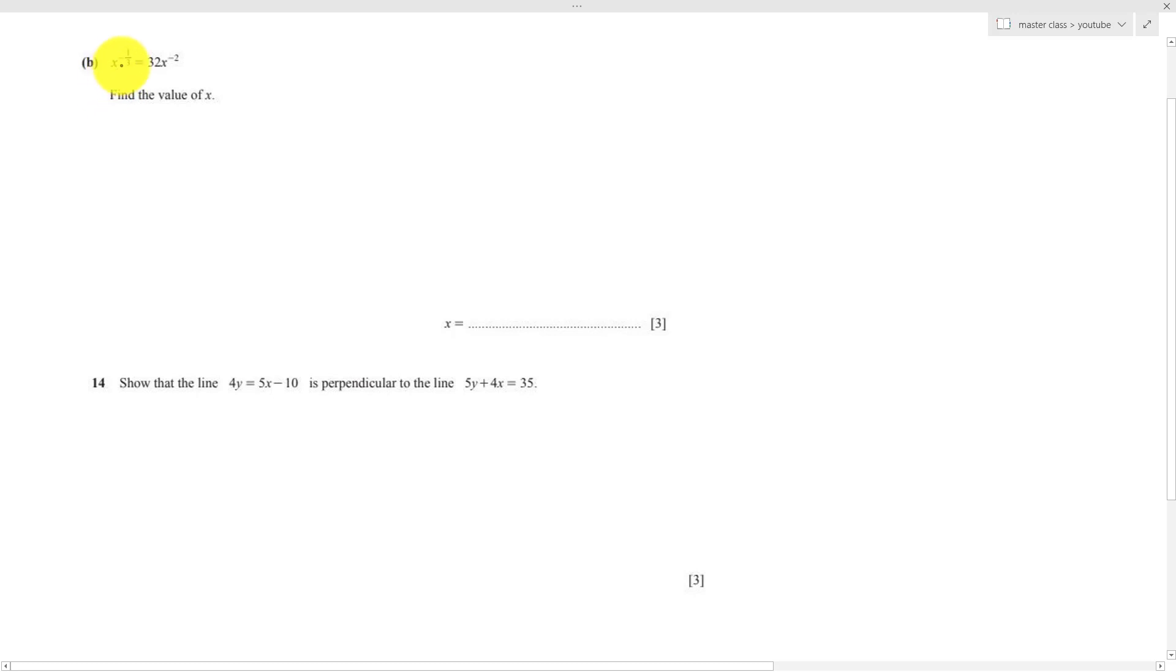You can see x power of negative 1 over 3 equals to 32x power of negative 2. For this kind of question, I will try to group the x together. So x power of negative 1 over 3, if x power of negative 2 moves to the other side, it becomes divided.